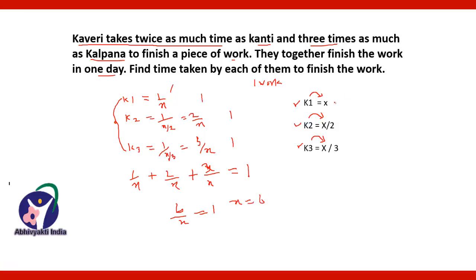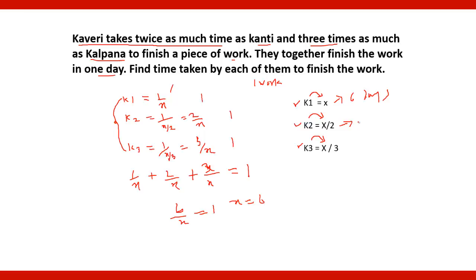So Kaveri finishes the work in 6 days, Kanti finishes it in 6/2 = 3 days, and Kalpana finishes it in 6/3 = 2 days.